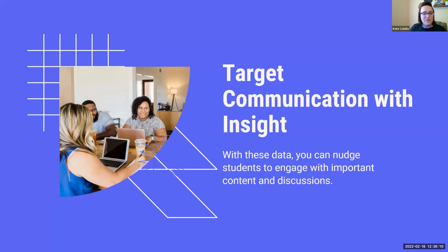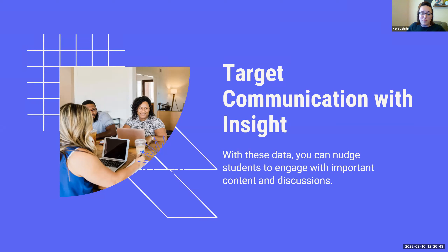Our last strategy is to use this information specifically to target reteaching — both to your whole class or to individual students. Intelligent agents are great to automate these communications, and we'll talk more about that in session two. For now, the simplest thing you can do is use the strategies we already talked about and just tell your students what you see. A good way to start: 'I noticed that...' and fill in the blanks. Students' perception that you're engaged with them is invaluable. These data help make your efforts more impactful so you can focus on what matters when communicating with them.